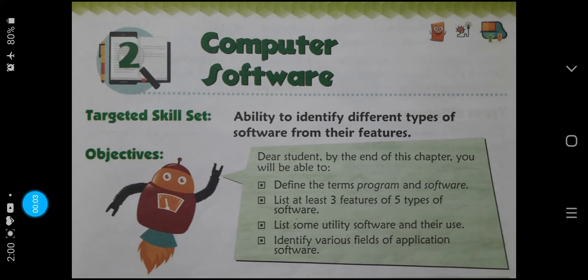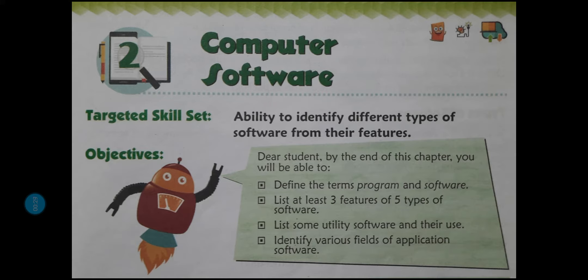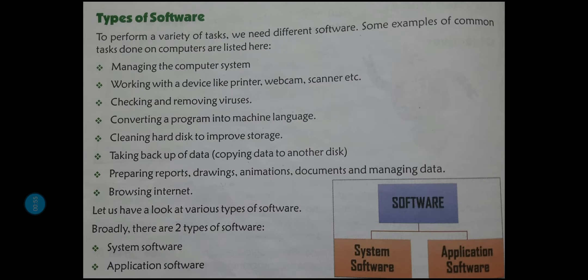Good morning children. Today in computer class we are going to move on with chapter 2, computer software. Last we studied about what do you mean by program — program kisay kahtay hai — then what do you mean by software, hum software kisay kahtay hai, instructions ka meaning kya hotha hai, logical sequence kya hotha hai, aur different languages ke baare mein bhi hum loog honne pahta tha. Could you remember? So when more than two, three, four, five groups of programs are combined together, toh woh ban jata hai ek software.